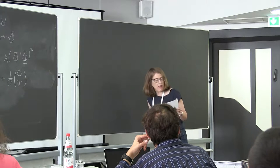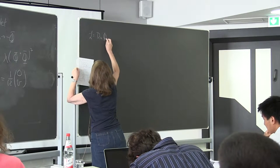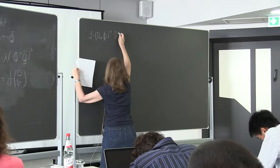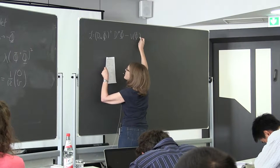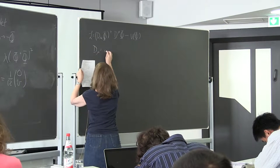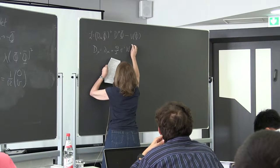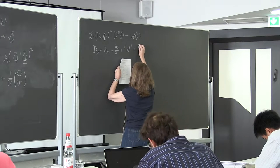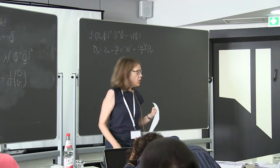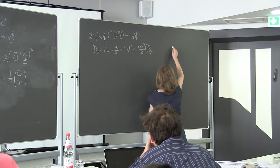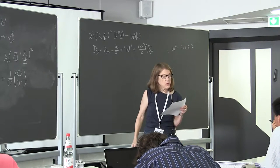The Lagrangian is L = |D_μ φ|² − V(φ), where the covariant derivative is D_μ = ∂_μ + i(g/2) σ_i W^i_μ + i(g'/2) Y B_μ. Here B_μ are the U(1) gauge fields, and W^i_μ (i = 1,2,3) are the SU(2) gauge fields. σ_i are the Pauli matrices.